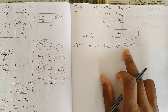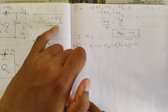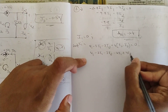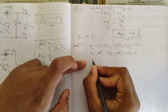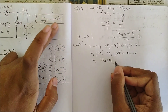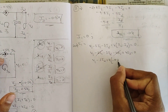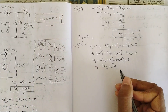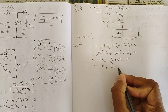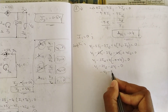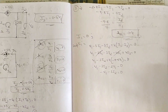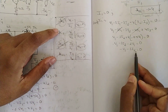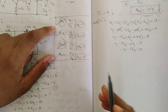Since i3 = minus 0.5·v1, substitute it in. With i1=0, all i1 terms vanish, leaving: v1 − 3·i2 + 4·(minus 0.5·v1) = 0, which gives v1 − 3·i2 − 2·v1 = 0, so minus v1 − 3·i2 = 0. We have an equation in v1 and i2, but now need to express i2 in terms of v2 to find h12.